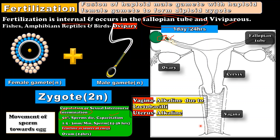In human females, one ovum is produced during the monthly cycle, alternatively from each ovary. This ovum is released in the middle of the monthly cycle. It passes into the fallopian tube and rests inside the ampulla for some time. The lifespan of the ovum is just 1 day, so the chance of fertilization is maximum if copulation occurs in the middle of the monthly cycle.